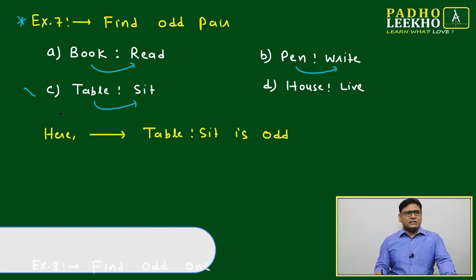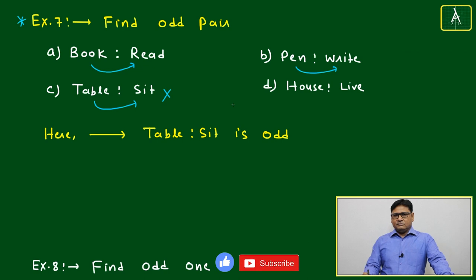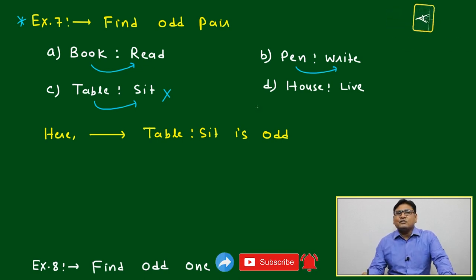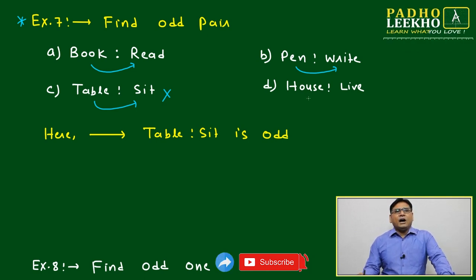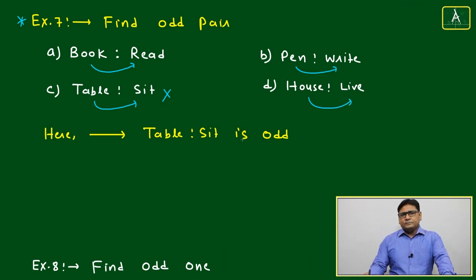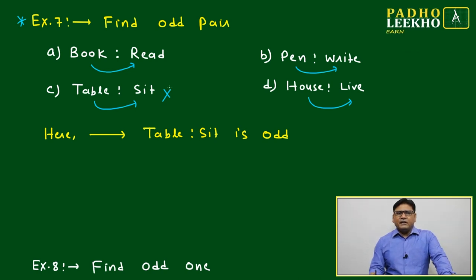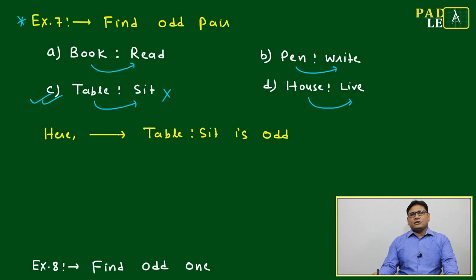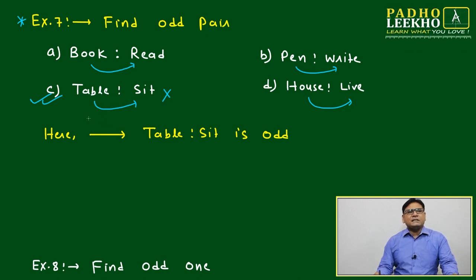I think we are not sitting on table, we are sitting on chair, if I'm not wrong. House - live, correct. So book-read, pen-write, house-live all are working well, but table-seat is not working fine. If in place of table it is given chair, it is working very well.